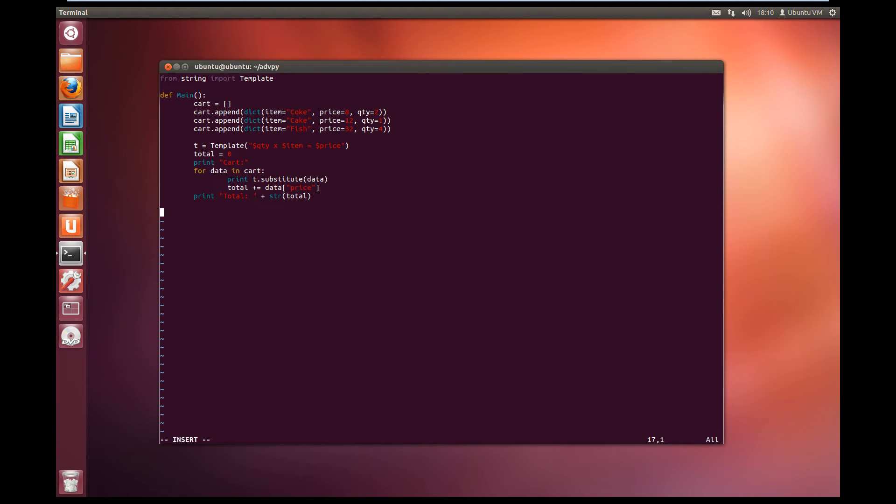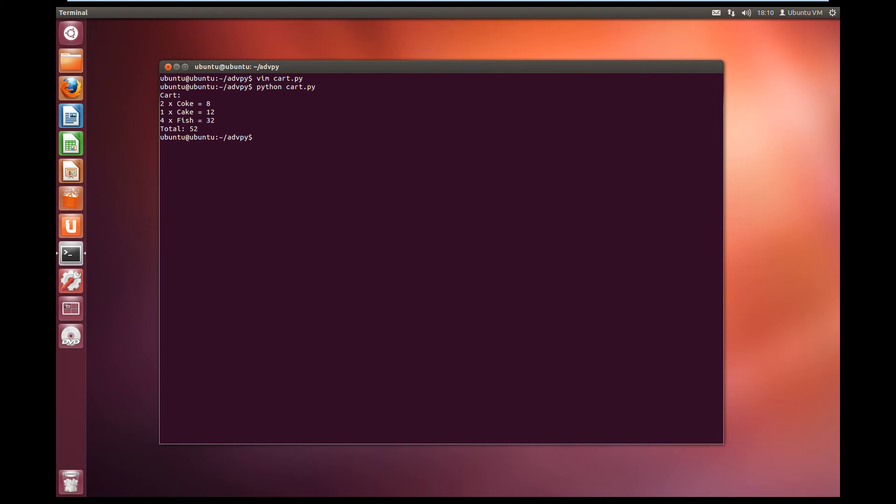So that's our main written. We'll just write our if name, so if name equal to main, then we are going to run main. So let's save this. Hopefully it works. Python cart.py. And we get our cart. It's 2 times coke which equals 8, 1 times cake equals 12, 4 times fish equals 32, and our total is 52. So that worked.